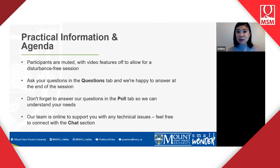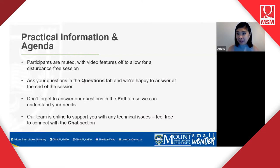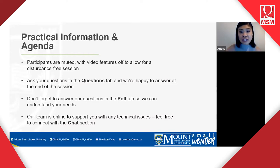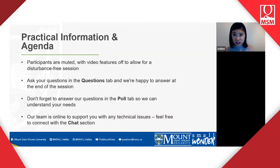Question one: have you received admission to Mount St. Vincent University for this fall 2020 semester? Yes or no? Question two: do you intend to register for online classes for this fall 2020 semester? There are four options to choose from. And last but not least: do you have a study permit? There are three selections — yes; no, but I've applied and I'm waiting for approval because visa application centers are closed; or no, I have not applied yet.